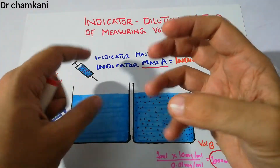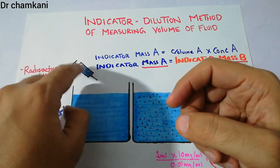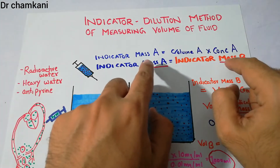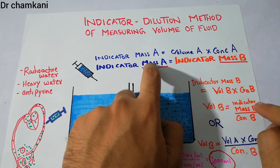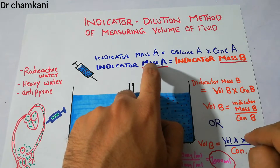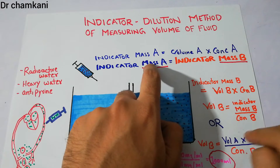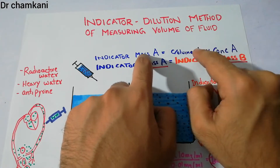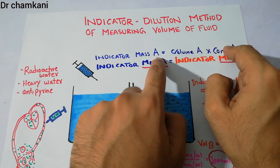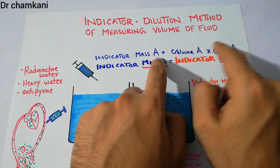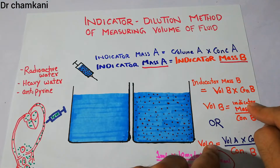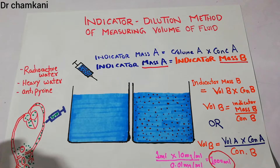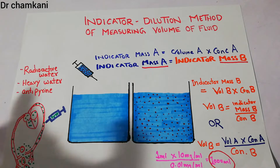We can use mass A instead of mass B because we know the values of this indicator — its volume and its concentration — and because mass B is equal to mass A. Instead of writing mass A we can write the product of volume and concentration, because mass A is the product of volume and concentration. So here instead of indicator B we use the volume and concentration. This is something we discussed in detail in the last lecture.